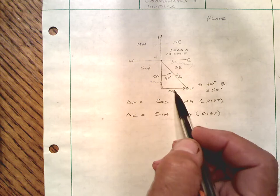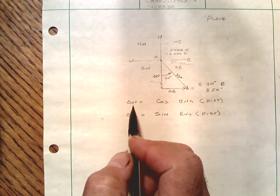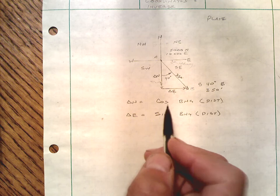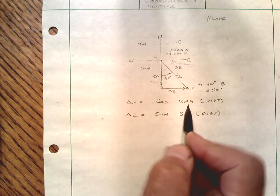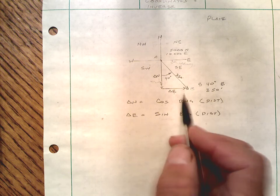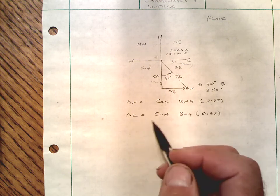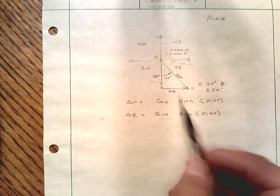Adjacent over hypotenuse, opposite over hypotenuse. If you want to think trigonometry or usually it's just best to try to memorize that the change in north is the cosine of the bearing multiplied by the distance and that the easting or the change in easting is the sine of the bearing times the distance.